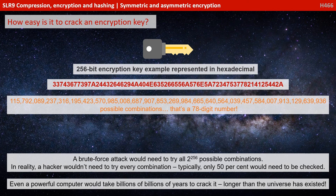If we were to try a brute force attack — trialling combinations to crack the key — we'd have to try all 2 to the power of 256 possible combinations. In reality, on average a hacker wouldn't need to try every combination; they'd typically only need to try about half. But even so, with the most powerful computers available today, it's commonly understood that it would take billions and billions of years to crack. In fact, an analogy you often find is that it would take longer to crack than the current age of the universe.